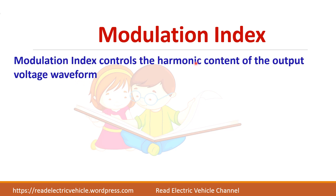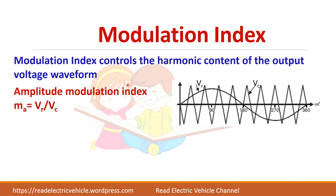Two important terms in SPWM are modulation index and frequency modulation ratio. The modulation index (ma) is the ratio of the reference wave amplitude VR to the carrier amplitude VC. This ratio controls both the harmonic content and the magnitude of the output voltage waveform. In normal operation, ma is always less than 1, meaning the sine wave magnitude is always less than the triangular waveform magnitude.